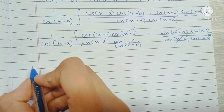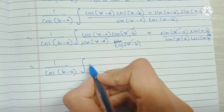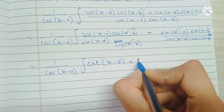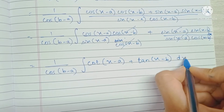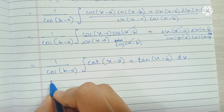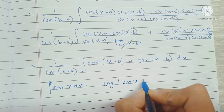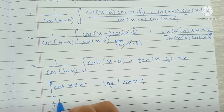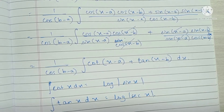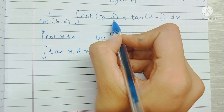Now in the integrand, the constant remains outside. We have cos(x-a) over sin(x-a), which becomes cot(x-a), and sin(x-b) over cos(x-b), which becomes tan(x-b). We have direct formulas for the integrals of cot and tan: the integral of cot(x) is log|sin(x)|, and the integral of tan(x) is log|sec(x)|. We can directly apply these formulas since (x-a) and (x-b) are linear terms in x.